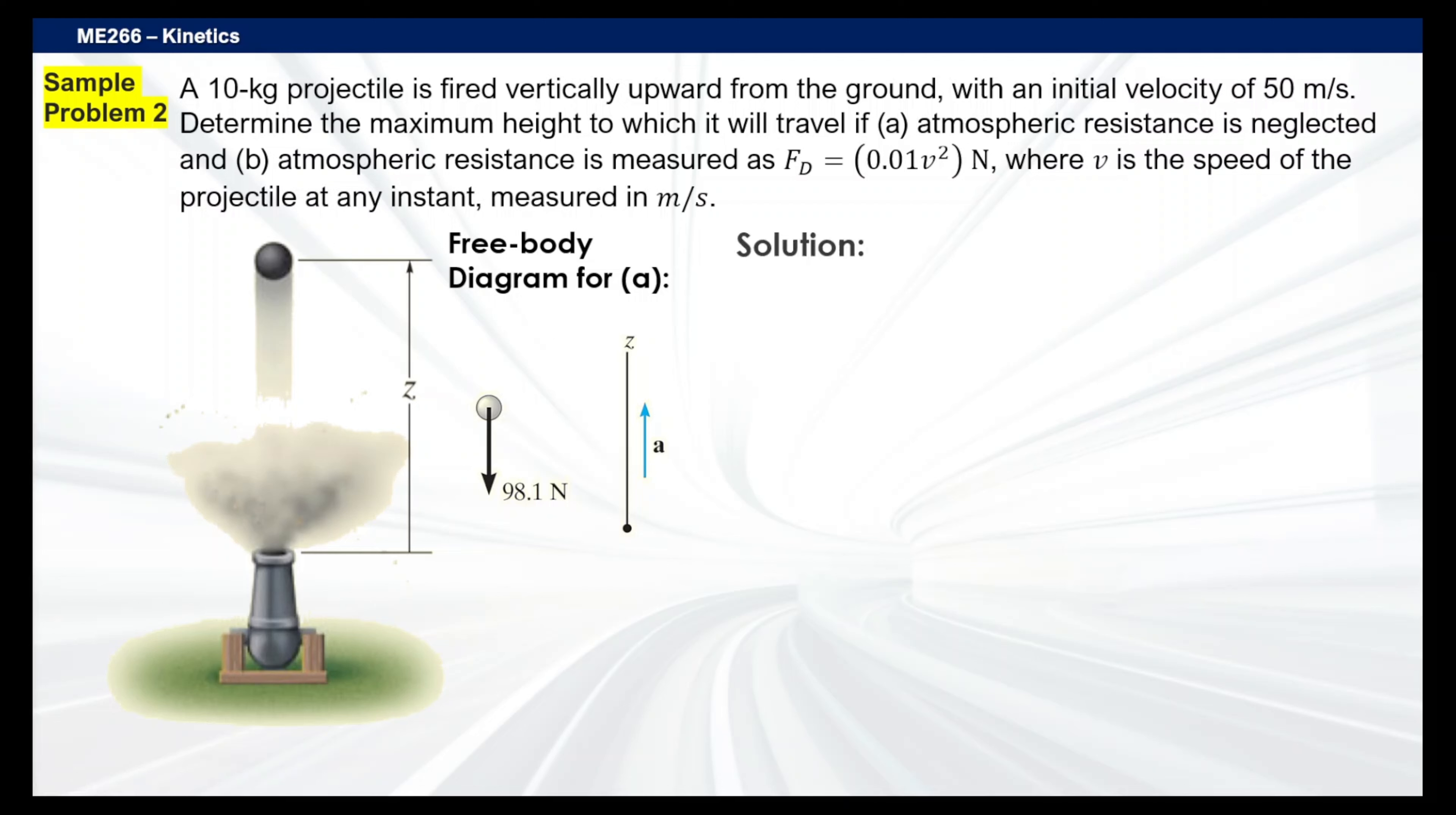Next up is to come up with our solutions here. We need to find the maximum height, so we're going to set up first our equations of motion. We've got to deal with this Z-axis, so we're just going to roll with that. We're going to go with summation of F sub Z equals M A sub Z. For F sub Z, it's just simply equals to the weight—that's your Z-axis force. M is your 10 kilograms, and AZ is unknown.